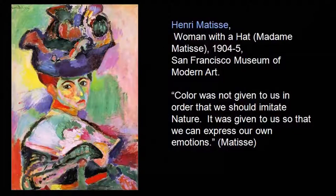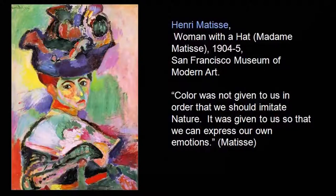Look at this painting by Henri Matisse, titled Woman with a Hat — Madame Matisse, painted in 1904 and 1905. As Matisse himself has said, the colour was not given to us in order that we should imitate nature. It was given to us so that we can express our own emotions. This is a very important statement that Matisse made.